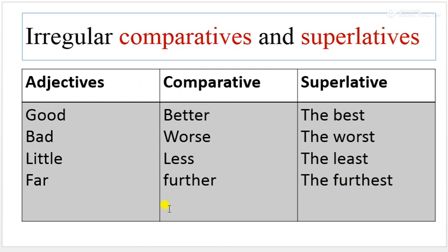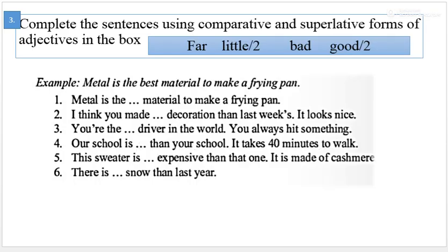Next exercise, please focus on these irregular adjectives into comparative and superlative degrees. Pay attention. Please look at the exercise. Complete the sentences using comparative and superlative forms of adjectives in the box. For example, far, little two times, bad, good two times. But you have to change this to comparative and superlative forms.